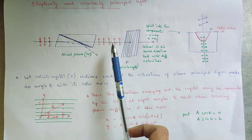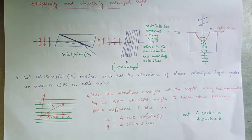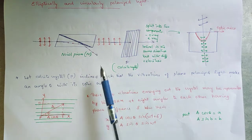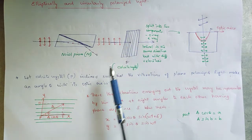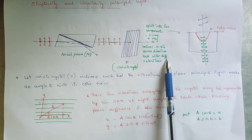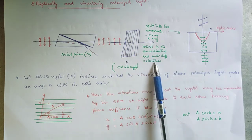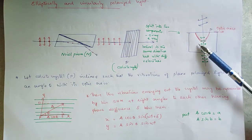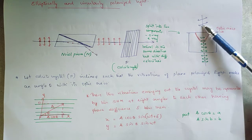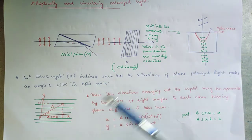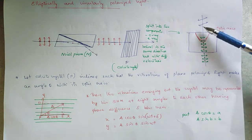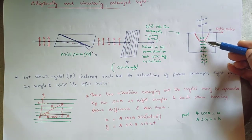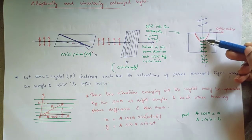This plane polarized light is allowed to fall on a calcite crystal. The calcite crystal splits the ray into two components: ordinary ray and extraordinary ray. One important point is that these ordinary and extraordinary rays travel in the same direction but with different velocities. The calcite crystal is inclined such that the vibrations of the plane polarized light make an angle theta with the optic axis. These rays split into two components — ordinary and extraordinary — and travel along the same direction but with different speeds.